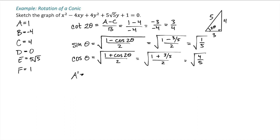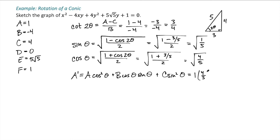For A prime, the formula is A cosine²θ plus B cosine θ sine θ plus C sine²θ. A is 1 and cosine²θ is 4 fifths. B is negative 4 and cosine θ times sine θ is the square root of 4 over 25, which is 2 fifths. C is 4 and sine²θ is 1 fifth. So A prime equals 4 fifths minus 8 fifths plus 4 fifths, which is zero.